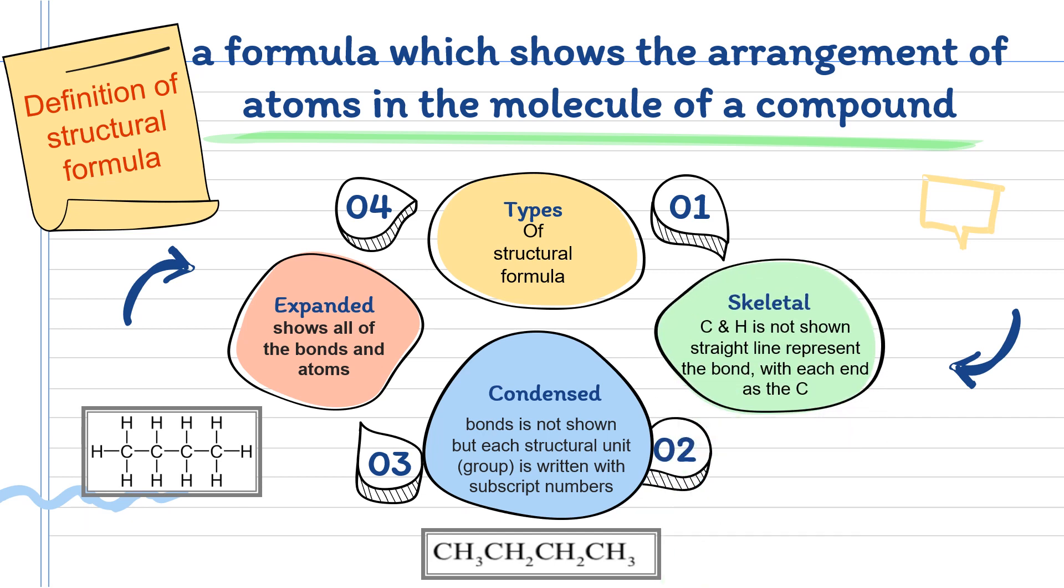And the third one is skeletal structural formula, which is also called line-angle structural formula. In this skeletal structure, it does not show carbon and hydrogen atoms.